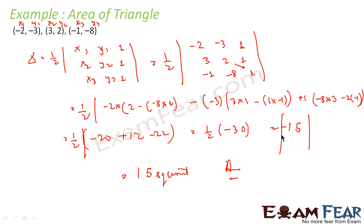So this question I took because the answer came out to be -15. And we have to note here that the area of triangle is always positive. So we will take the absolute value. Absolute value of -15 is 15.